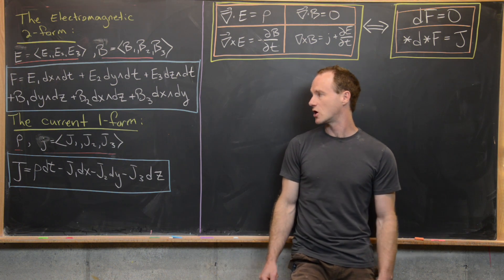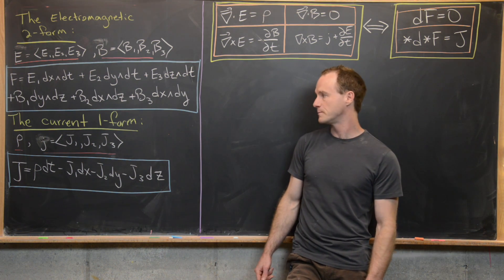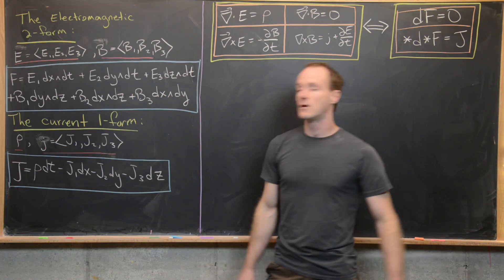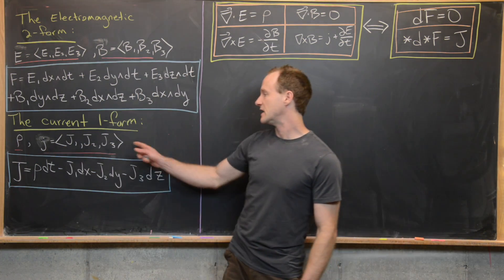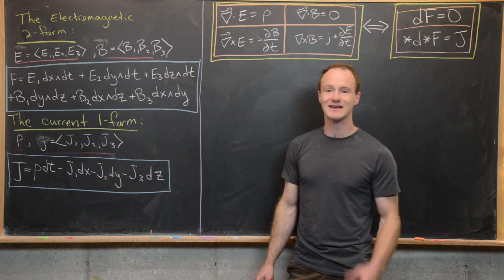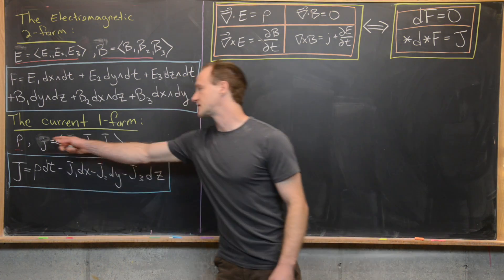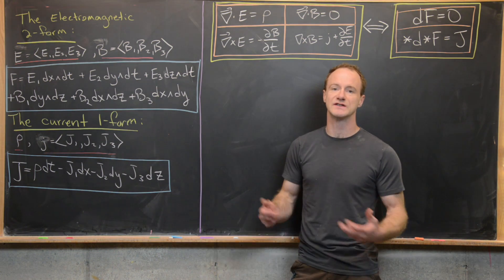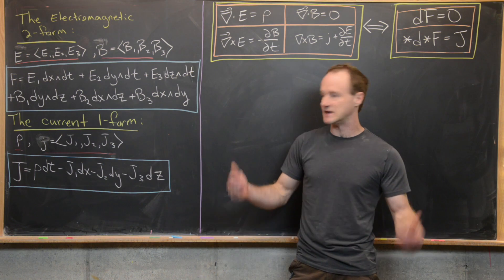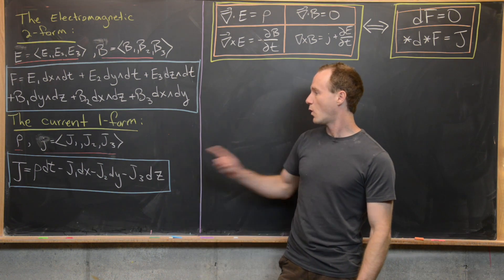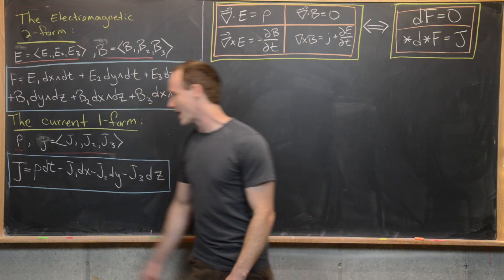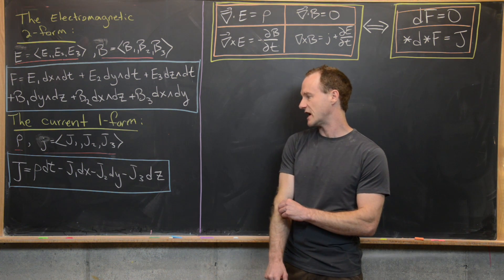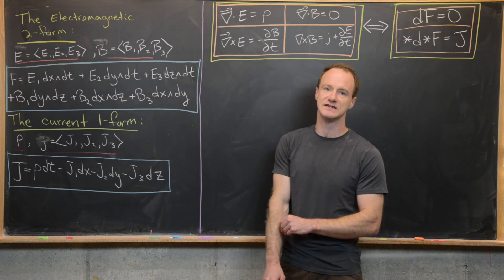We also need the current one-form. To define that, we need a function ρ and a vector field J. The vector field J is the current, and ρ is the charge density — both functions of x, y, z, and t. This one-form, called capital J, is: ρ dt − J1 dx − J2 dy − J3 dz.